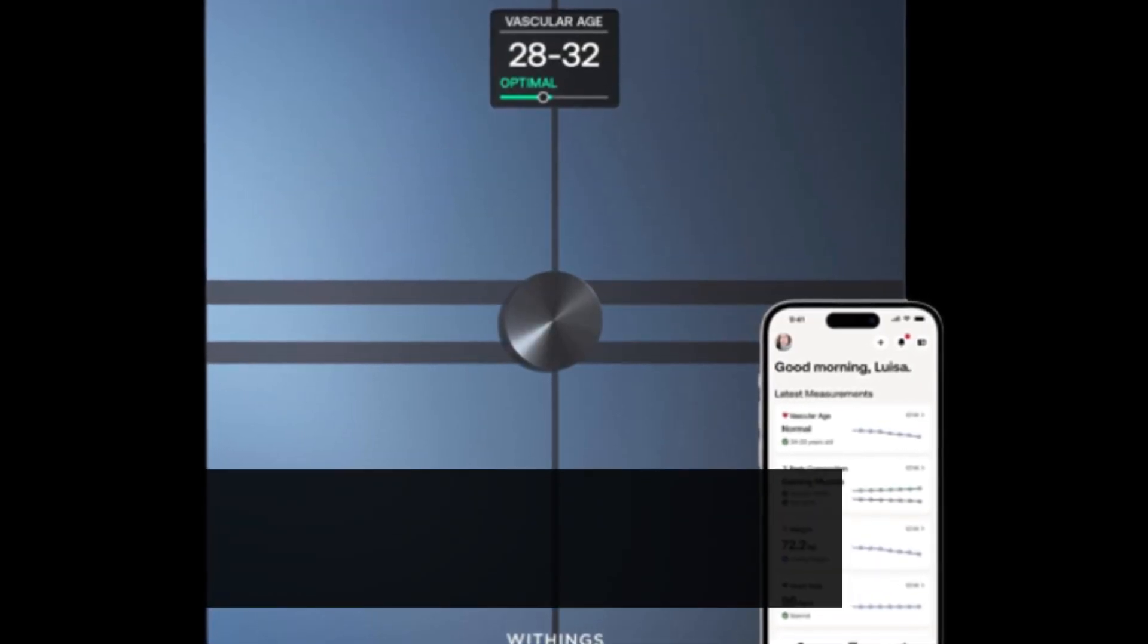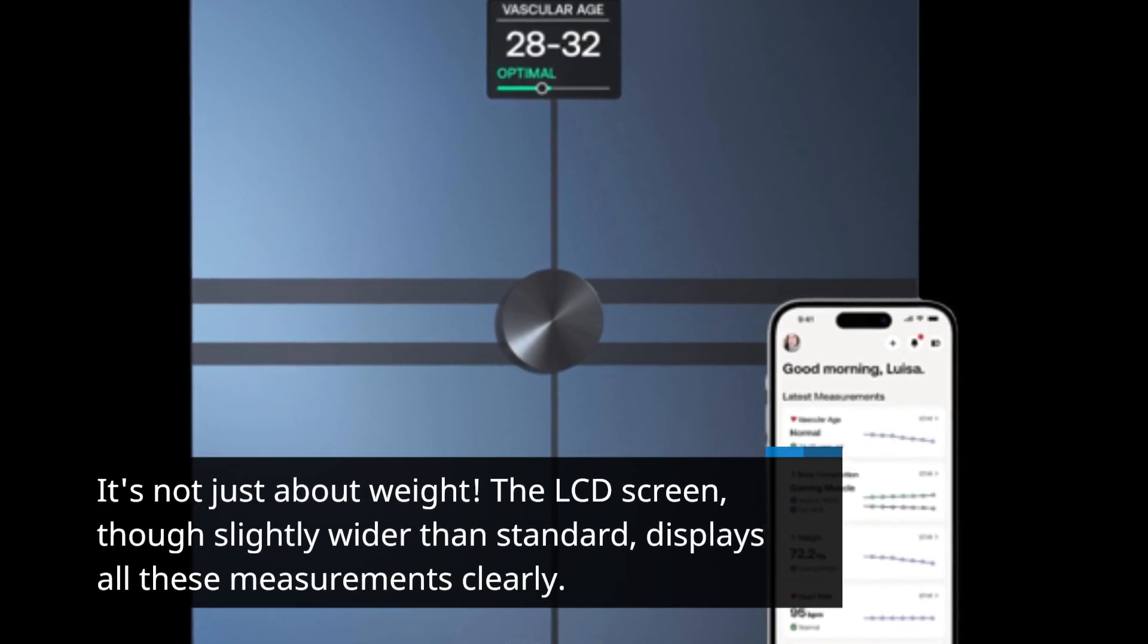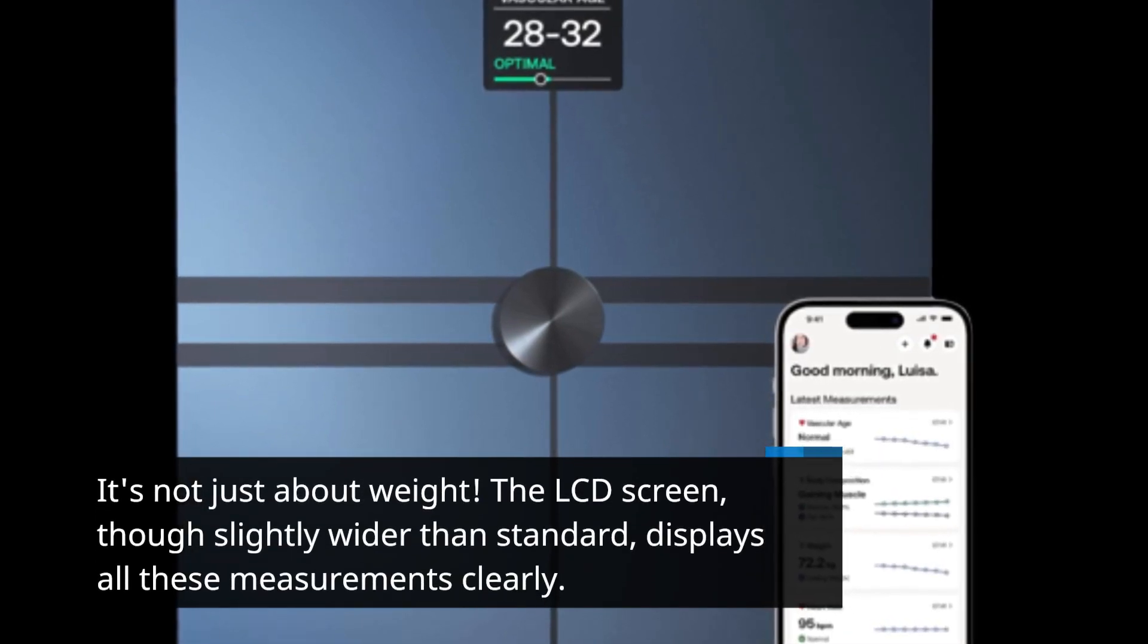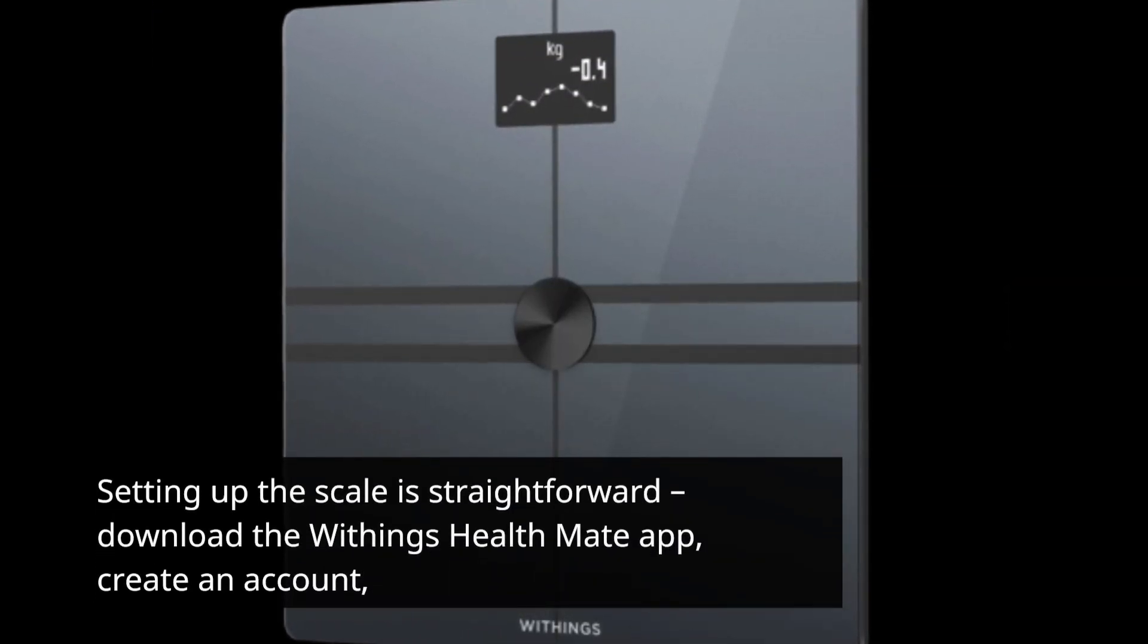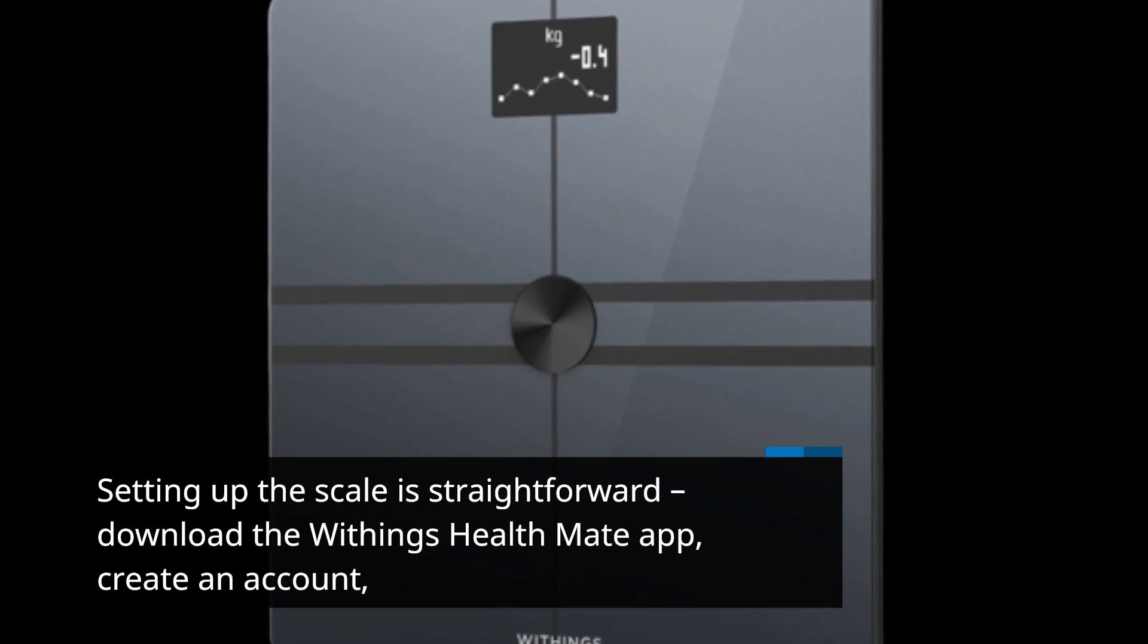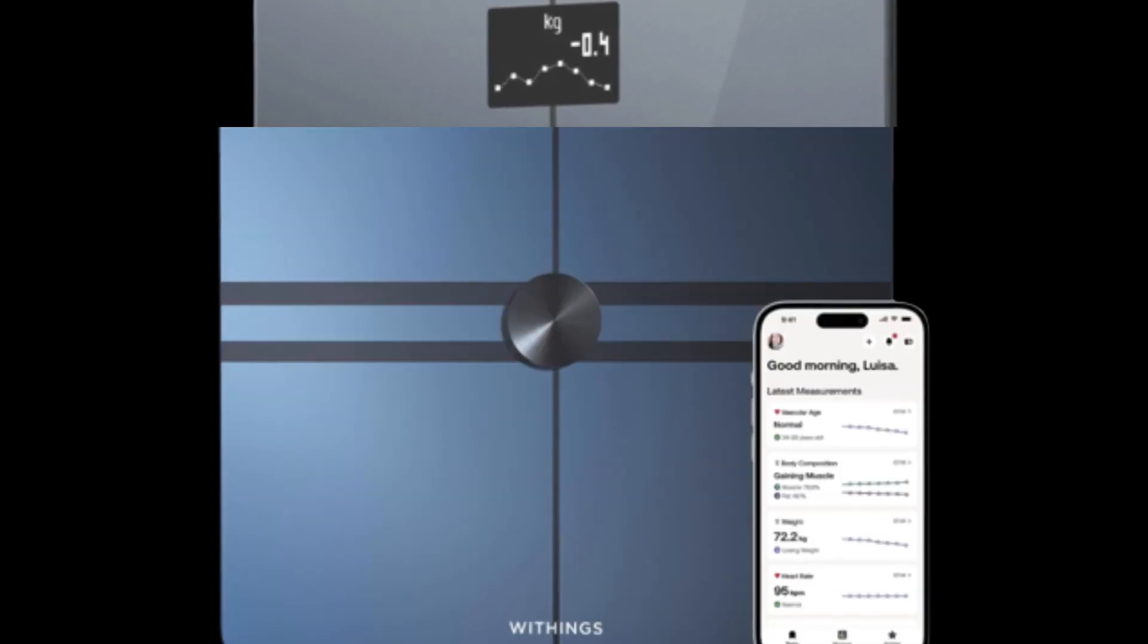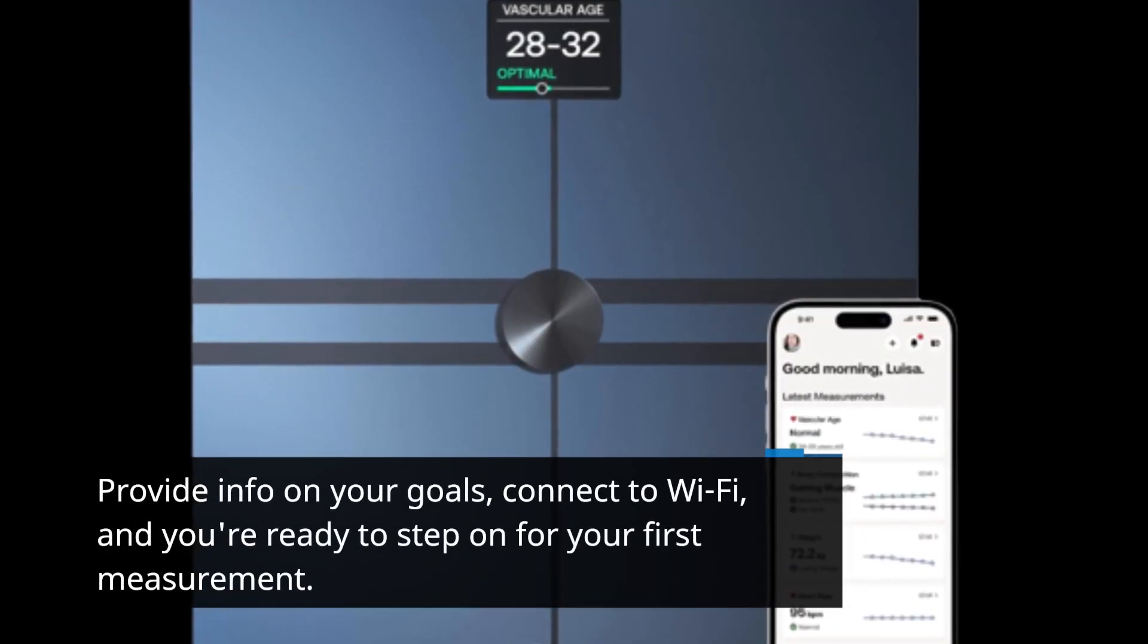It's not just about weight. The LCD screen, though slightly wider than standard, displays all these measurements clearly. Setting up the scale is straightforward: download the Withings Health Mate app, create an account, provide info on your goals, connect to Wi-Fi, and you're ready to step on for your first measurement.